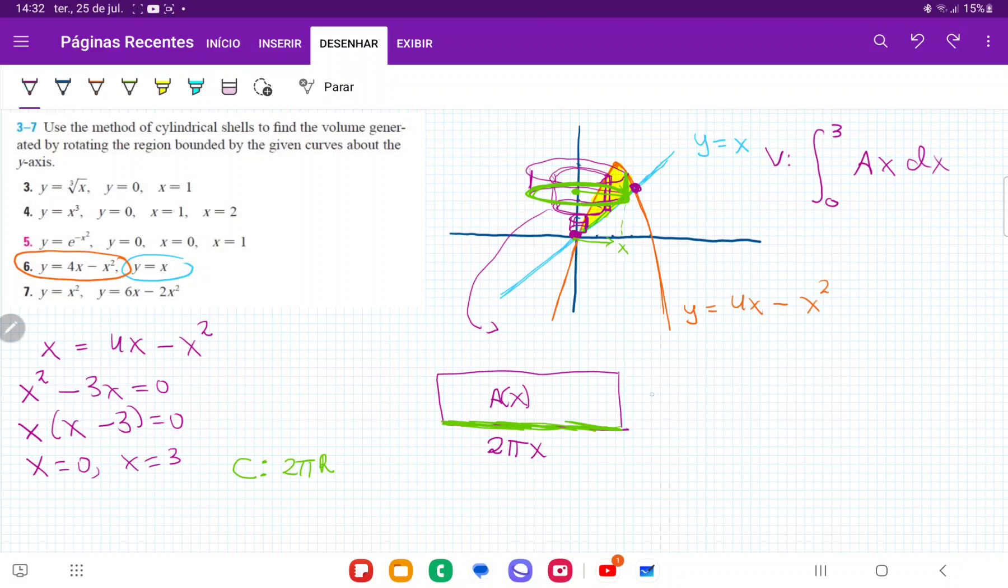So we can say here that the height is basically the orange, so 4x minus x squared, and then minus the height of the blue. So minus x. And then when we simplify this, we get 4x minus x. So we get 3x minus x squared. So therefore our A(x) is equal to base times height, which is equal to 2 pi x times 3x minus x squared, which is equal to 2 pi. And then I'm going to distribute the x. So this is 3x squared minus x cubed.